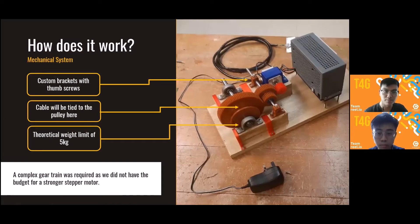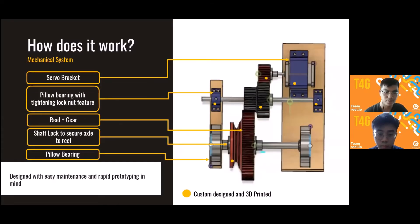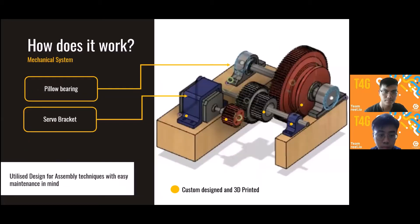Moving on to the mechanical system. You can see the gear train on the left and the electronics box on the right. There are many custom 3D-printed parts on this device, highlighted in yellow, while the rest are bought off the shelf. We designed this device with easy assembly and maintenance in mind — all parts are easily accessible and replaceable.